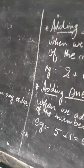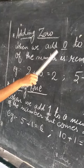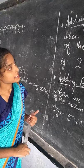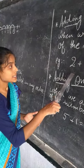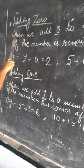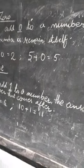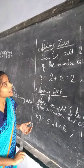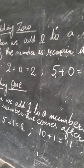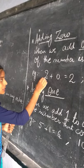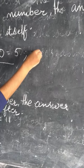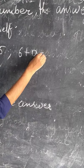Adding zero — this is a fact. When we add zero to a number, the number stays the same. For example: two plus zero equals to two. Five plus zero equals to five. Six plus zero equals to six.